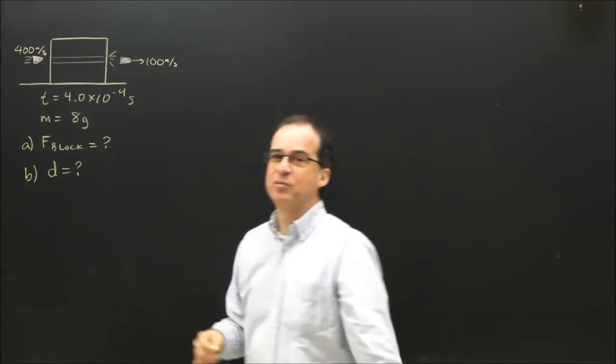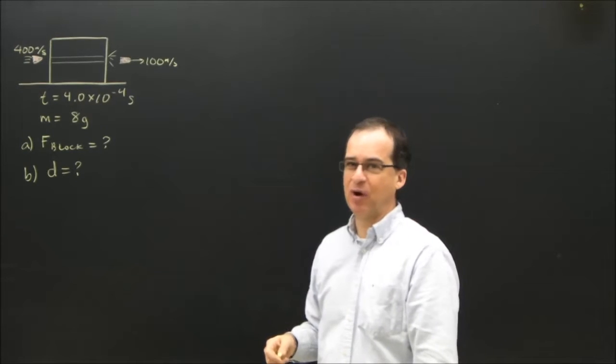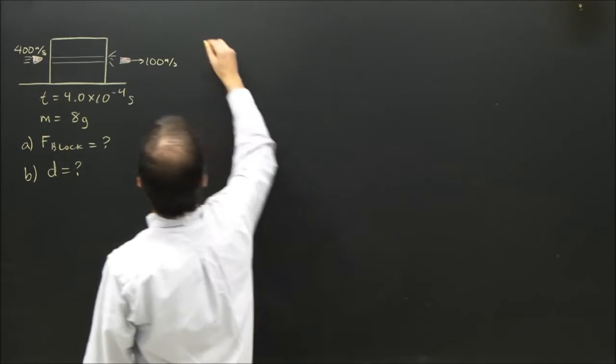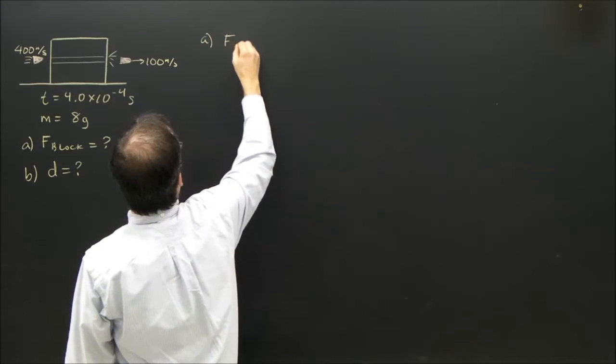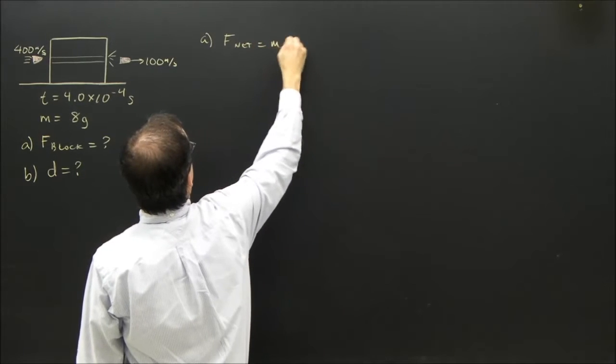So I want to know what the force on the block of wood is. Well, that's the Newton's Second Law problem, and so we use F net equals MA. So for part A, F net equals MA.